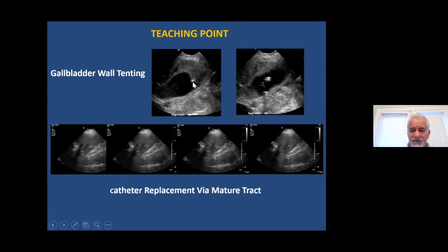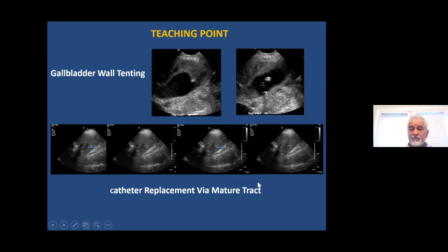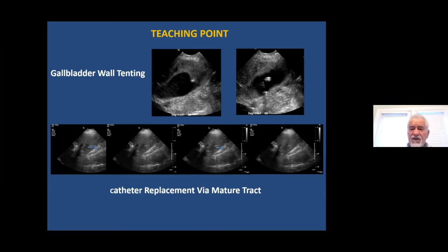Sometimes when the gallbladder wall is very thick and you're placing the trocar or needle, there is tenting — pushing in of the gallbladder wall. At that point, you make a jerky movement to penetrate through the gallbladder wall and place the catheter inside. If the catheter comes out three to four weeks later, it is generally easy to replace through the already-matured tract. Inject saline into the tract to distend it, then gradually advance a new catheter by hand and push it through — usually this will work.